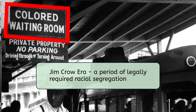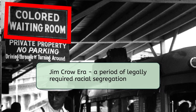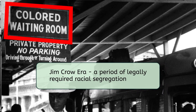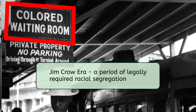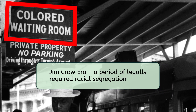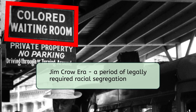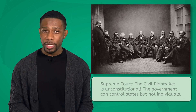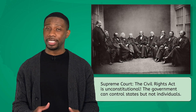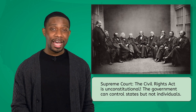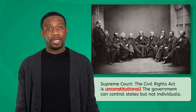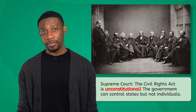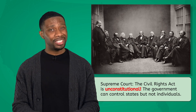During this time, it was common for a Black person to have to wait in a separate room at a doctor's office, drink from a separate water fountain, or wait outside behind a restaurant for food, because the owner wouldn't allow them to sit inside and eat with white patrons. In 1883, the Supreme Court ruled that the Civil Rights Act of 1875 was unconstitutional, saying that the government could only control states, not individuals. This allowed segregation to continue.